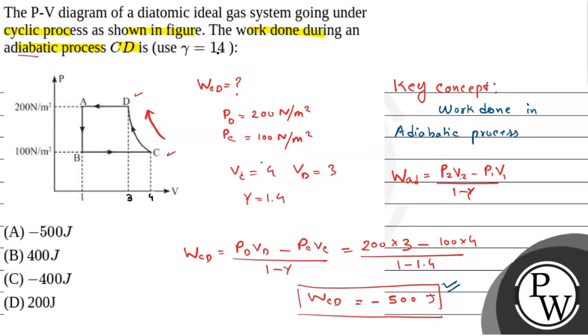From our final answer, that is minus of 500 J. So our answer A is our correct answer. Right? Hope you understand it. Best of luck.